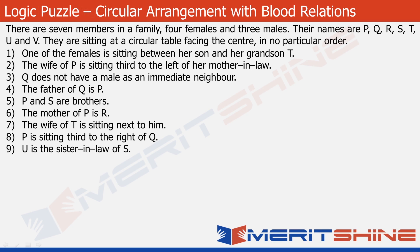The problem we are going to discuss today is a typical circular arrangement problem with blood relations. It talks about a family of seven members in which there are four females and three males, sitting around a circular table, all of them facing the center. There are two approaches: start drawing the structure straight away, or complete the family tree first and then draw the circular structure. I would take the latter approach to show how it can be solved very easily and elegantly.